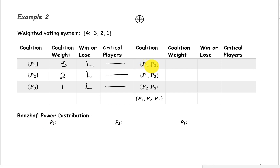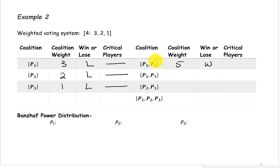The coalition containing players 1 and 2 has a weight of 3 plus 2, or 5. This is a winning coalition. If we remove player 2, the weight drops down to 3, causing the coalition to lose, so player 2 is critical. If player 1 were to be removed, the weight would drop down to just 2, causing the coalition to lose, so player 1 is also critical. Both players 1 and 2 are critical in this coalition.